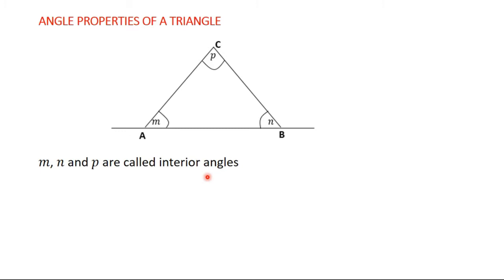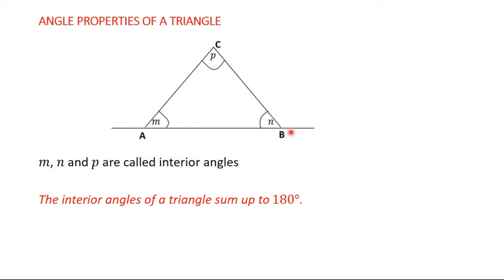Now what is the property of these interior angles? The interior angles of a triangle sum up to 180 degrees. So if you add all the angles in a triangle — here, if you add M plus N plus P — you must get 180 degrees. This property is very, very important.